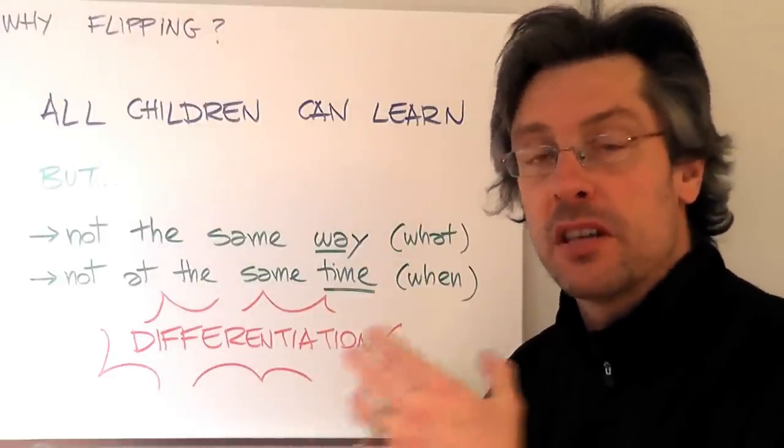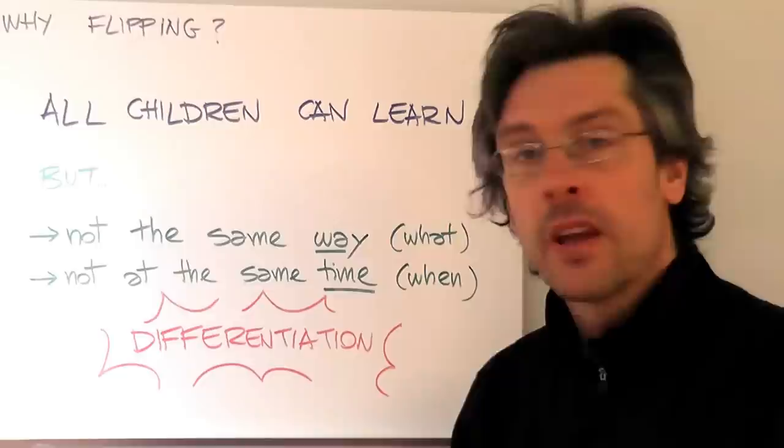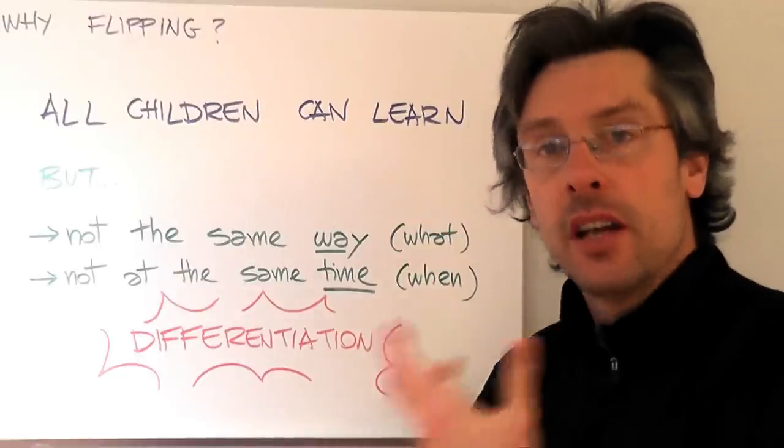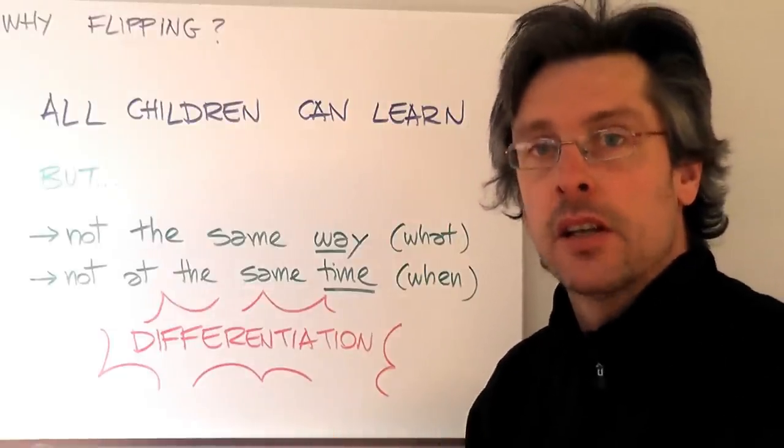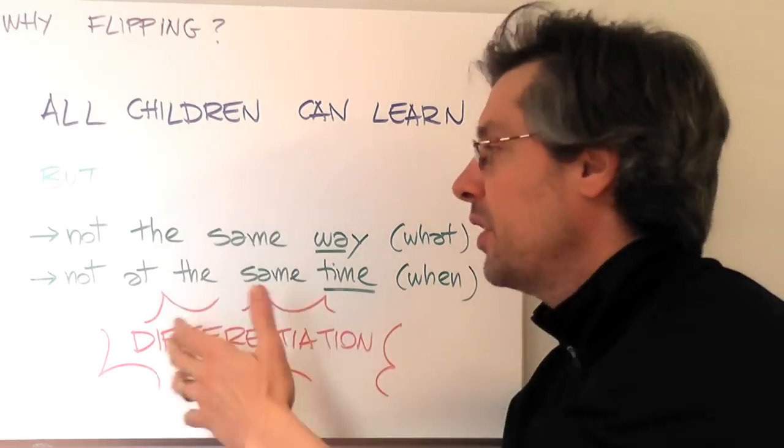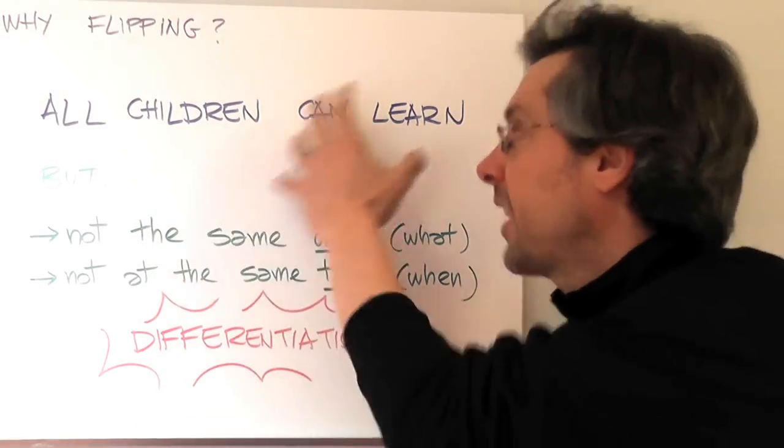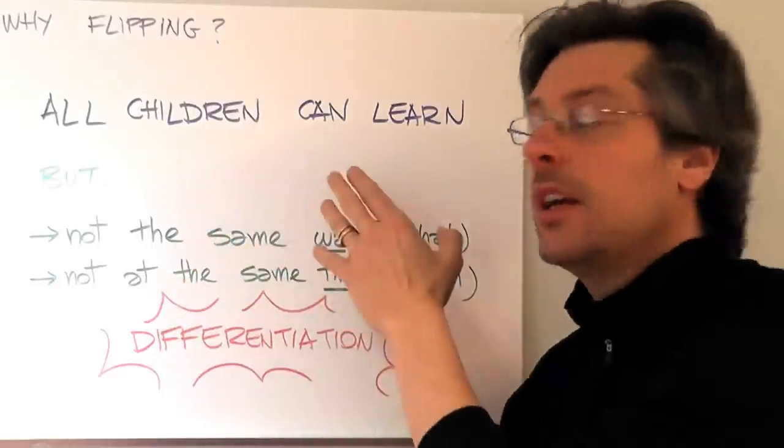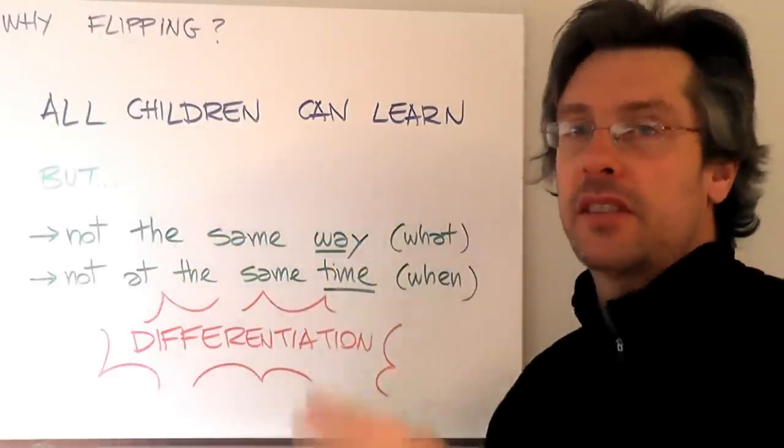So every student will have his or her own pacing and this is where differentiation takes place. Differentiation is when you take into account these two facts: that children can learn but they will not learn the same way at the same time.